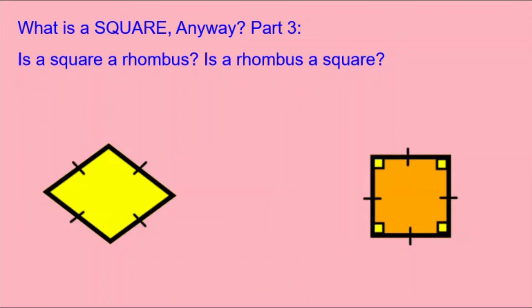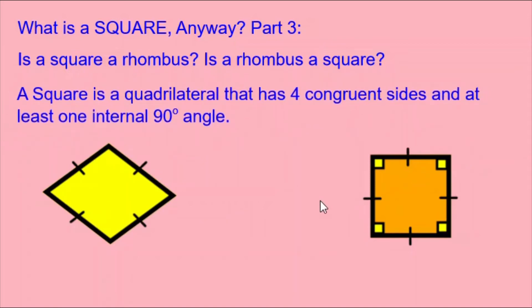This time, we're answering the question: is a square also a rhombus? And is a rhombus also a square? Over here on the right, I have a diagram of a square that shows it has four internal 90-degree angles, as shown by the little yellow squares in the corners, and four congruent sides, as shown by the little lines. Over here on the left, I have a yellow rhombus, which also shows that it has four congruent sides, but it does not have 90-degree angles in the corners — or at least, it does not necessarily have them.